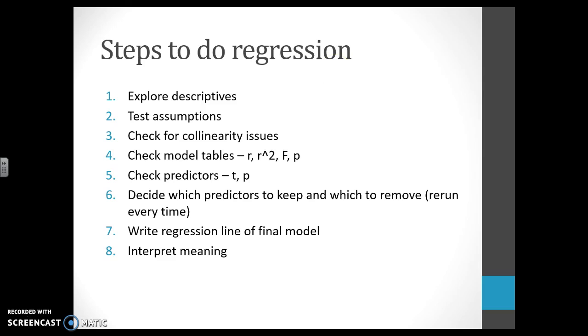Here's your steps again. Start with descriptives. Is everything normally distributed? Do we have outliers? Do we have collinearity issues? What are the correlations between the IV and the DV? We're going to test all the assumptions. We throw in all the variables and we test assumptions for each one. We check for collinearity issues and we make those decisions. We check for outliers and make those decisions. We check all of our models. Then we check our predictors. We decide which predictors to keep, which ones to remove, and we rerun it every time.